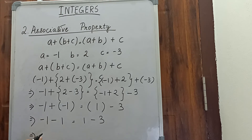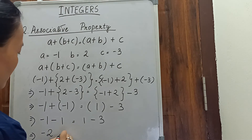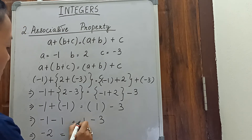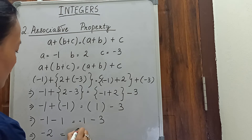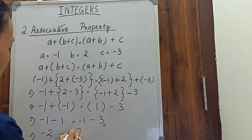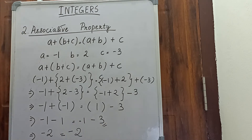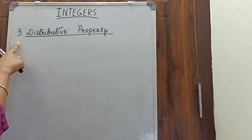So minus 1 equals 1 minus 3: minus and minus is plus, so 1 plus 1 is 2 and the sign is minus, giving minus 2. On the right, plus and minus is minus, so 3 minus 1 is 2, sign of the bigger number is minus, so it is also minus 2. Hence associative property is proved.